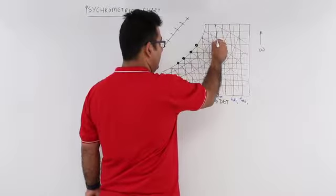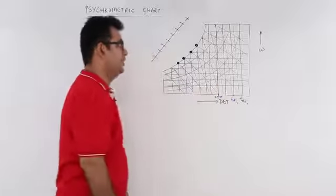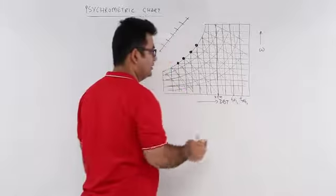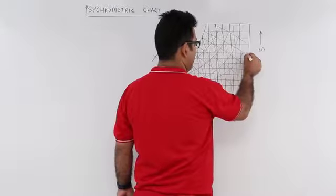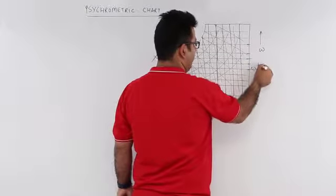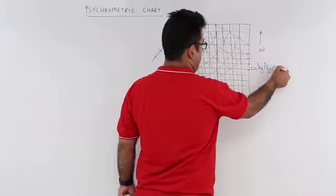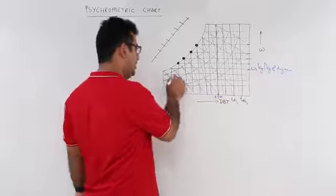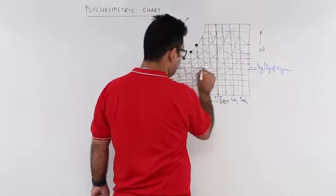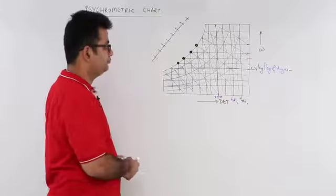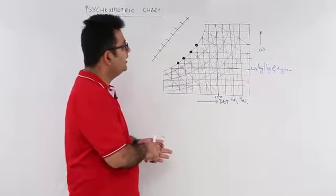For example, if you have a dry bulb temperature of 25 degrees Celsius, this entire vertical line represents 25°C. Then you have the horizontal lines which correspond to the vertical axis showing specific humidity — let's say omega 1, in kg of water vapor per kg of dry air. This entire horizontal line indicates the omega 1 value of specific humidity.